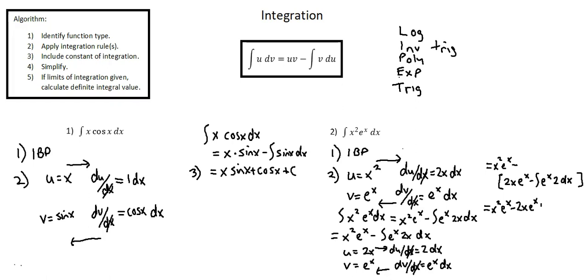Distributing the negative gives us a plus, so plus the integral of 2 times e to the power of x, which is plus 2 times the integral of e to the power of x with respect to x. That integral is e to the power of x.